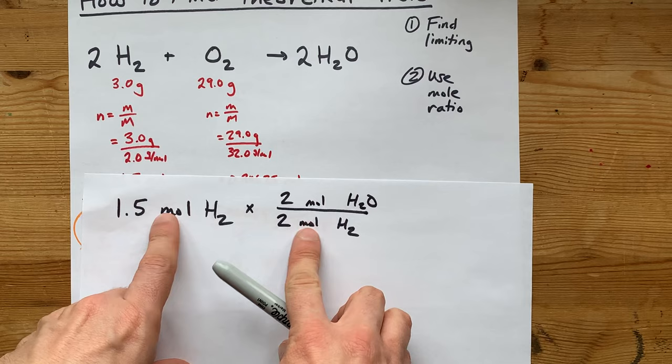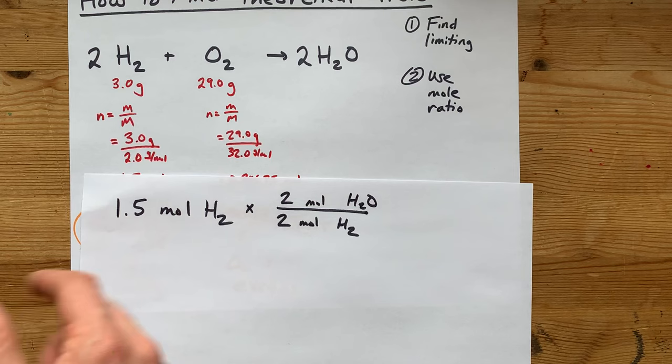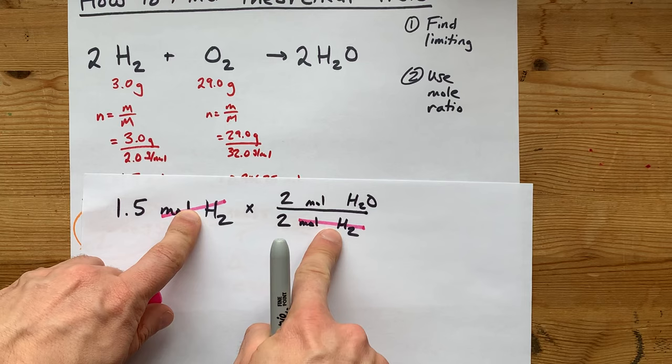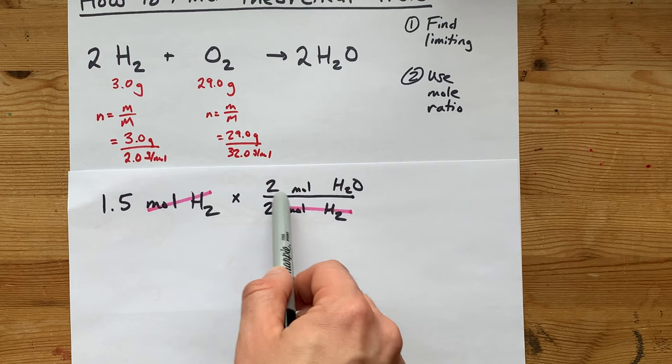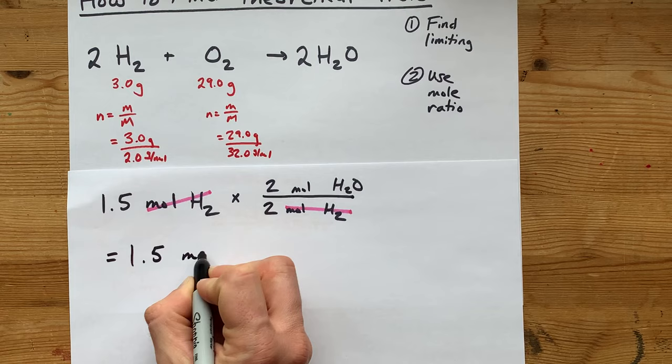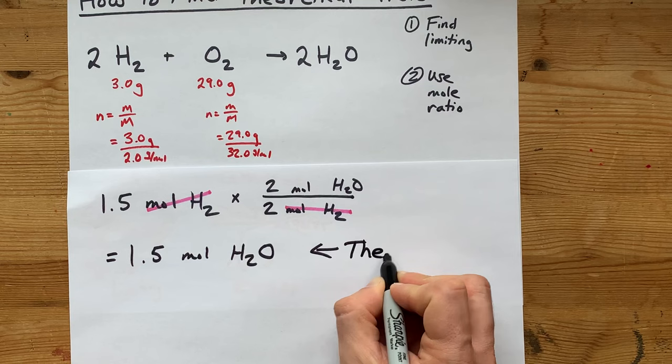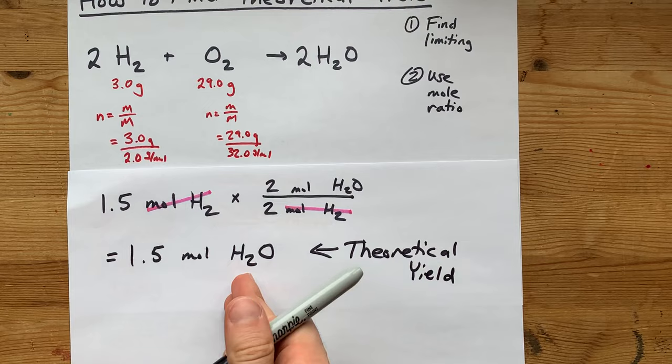The reason the thing you already know about goes on bottom is so that those units can cancel with each other. Here we have moles of H2 being divided by moles of H2. Anything divided by itself is 1, and the unit we're left with is moles of H2O. That's perfect. 1.5 times 2 is 3, divided by 2 is 1.5. So we get 1.5 moles of H2O. That is the theoretical yield. It's as simple as that.